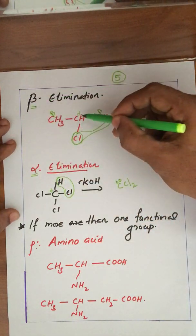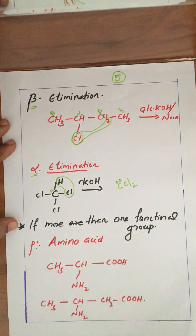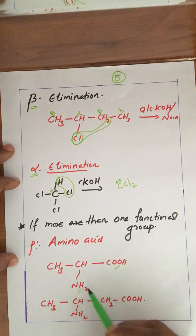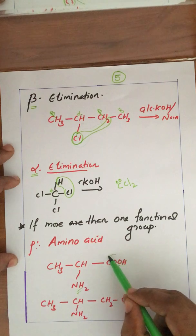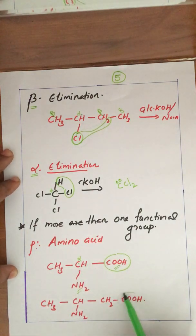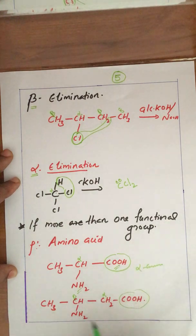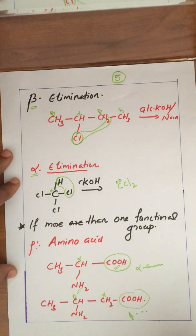One more point: if there is more than one functional group, which is taken as alpha and which as beta? For example, COOH and NH2 — during the nomenclature system, COOH has more priority than NH2. Therefore, COOH is taken as the more prior group, and the carbon attached to it is the alpha position. This is why a molecule with NH2 at the alpha position is called an alpha amino acid, and one with NH2 at the beta position is called a beta amino acid. The most prior group is taken as the most important group, and the carbon attached to that is the alpha position.